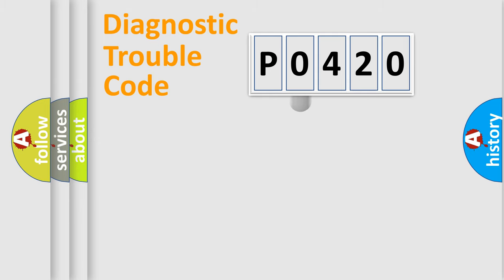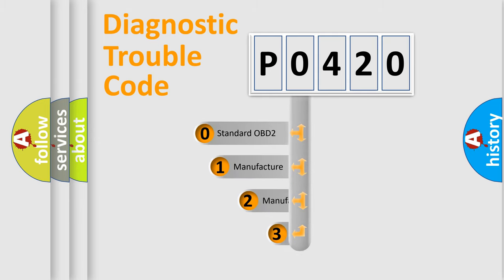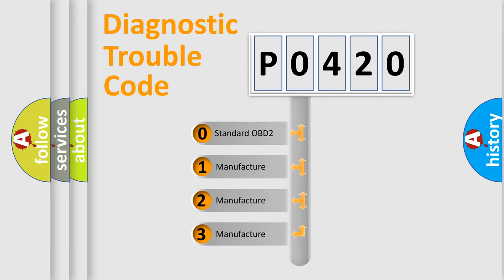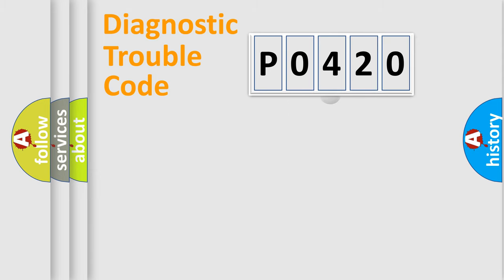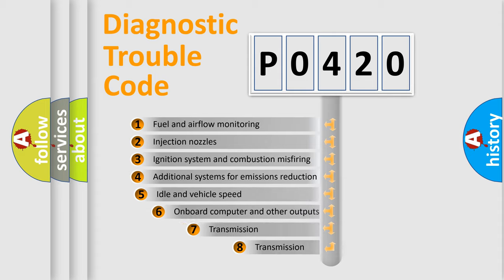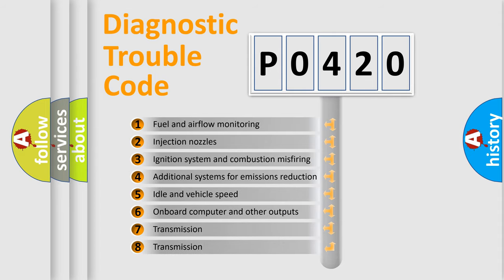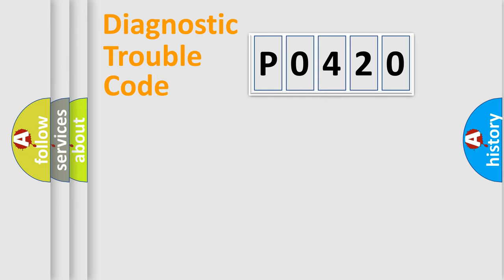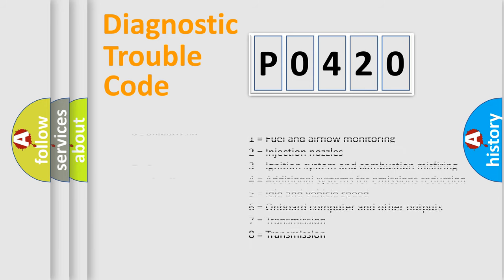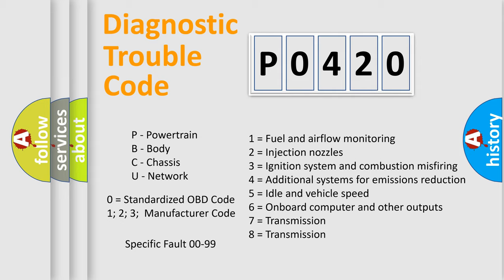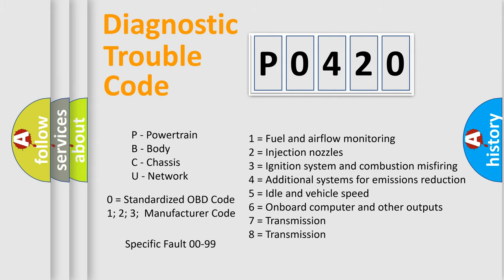This distribution is defined in the first character of the code. If the second character is expressed as zero, it is a standardized error. In the case of numbers 1, 2, or 3, it is a more manufacturer-specific expression of a car-specific error. The third character specifies a subset of errors. The distribution shown is valid only for the standardized DTC code. Only the last two characters define the specific fault of the group. This division is valid only if the second character code is expressed by the number zero.